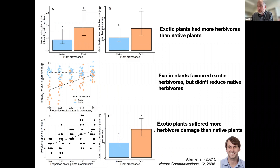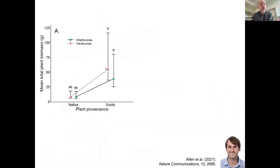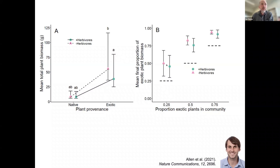Perhaps unsurprisingly given those results, the exotics are suffering more damage — which sounds like a good thing; maybe herbivores will prevent the invasion. But unfortunately that's not what happens. Herbivores do reduce the biomass of exotics, but if you look at the proportion of final biomass that was exotic, whether you have herbivores or not, it was always dominated by exotic plants. So exotic plants are accumulating the herbivores but tolerating them — they're still able to dominate the mesocosms.